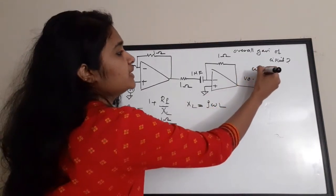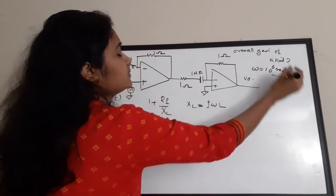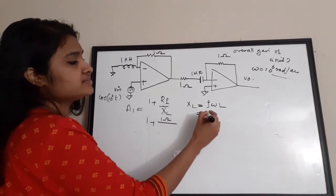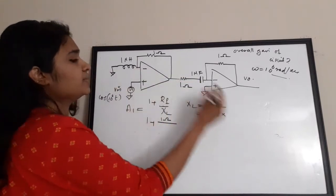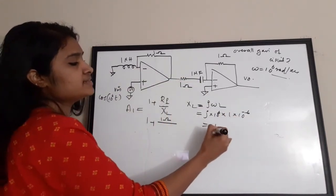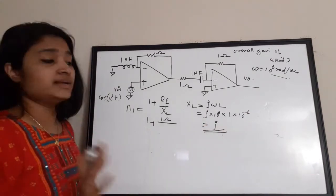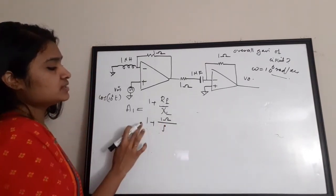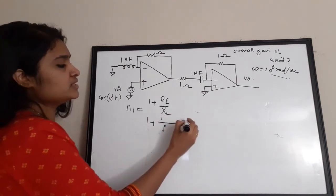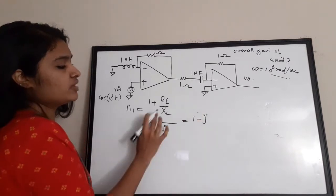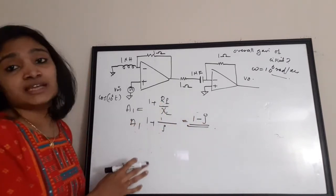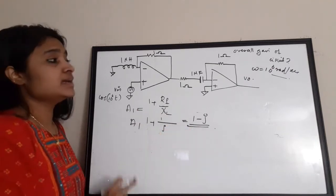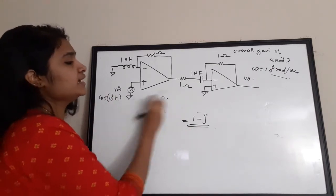Substituting XL = j into the Stage 1 gain formula: A1 = 1 + 1/j. Since 1/j = −j, we get A1 = 1 − j. So the gain of Stage 1 (non-inverting amplifier with an inductive input impedance) is 1 − j. Now we move to Stage 2.